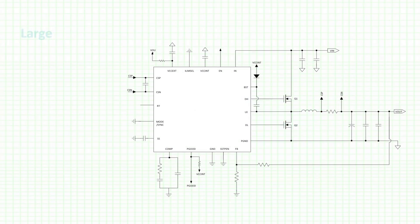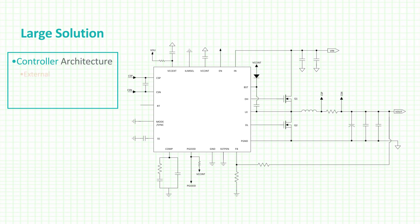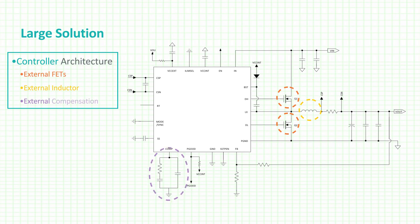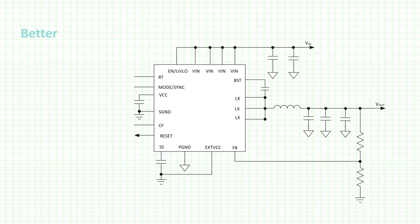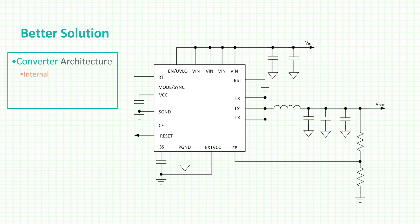Let's take a look at some major DC to DC converter architectures. The controller architecture consists of a controller, external FETs, an external inductor, and external compensation. Its disadvantages include a high component count, which means more design time to size the components and the compensation network in order to achieve good performance. The converter architecture includes internal FETs, an external inductor, and internal compensation.